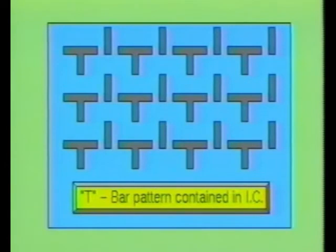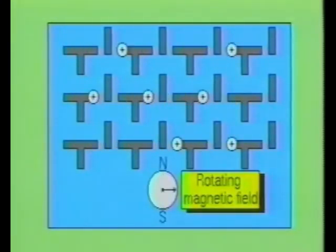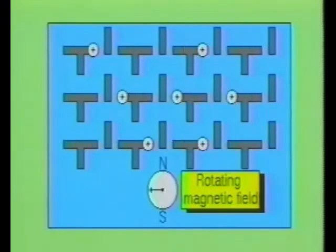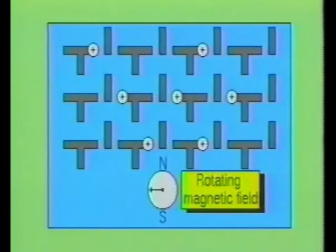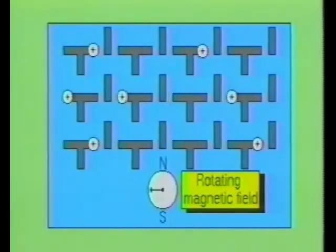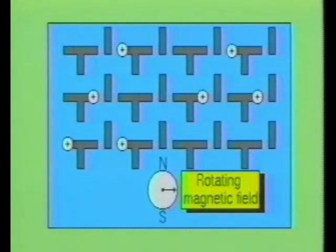Bubble movement is controlled by the pattern of permanent magnetic material that was deposited on the magnetic garnet film. As the rotating magnetic field moves, it causes the molecules within the permanent magnetic material to align with the field. Each bubble will move to seek the nearest north pole of a segment. The T-bar configuration will keep the bubbles separated, so there is only one bubble per segment. The presence of a bubble indicates a one, and the absence of a bubble indicates a zero.